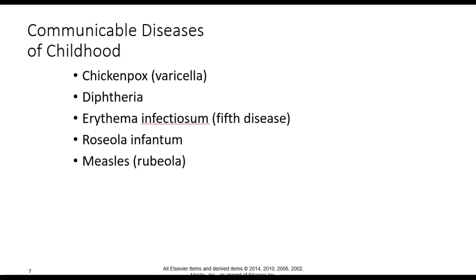Respiratory symptoms appear after an average of 10 days. Children typically have a prodrome period — meaning those early symptoms indicating the onset of disease — with a fever that rises gradually and the three C's: coryza, which is a profuse runny nose that appears like a common cold; cough; and conjunctivitis.